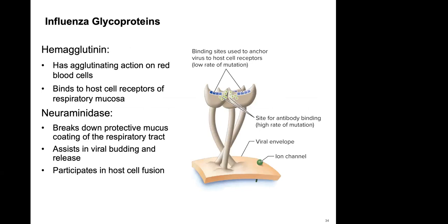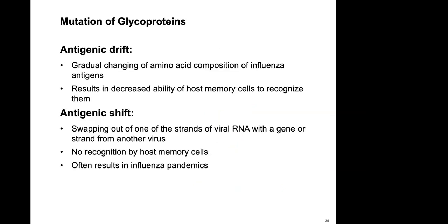The influenza virus has two different surface spikes: hemagglutinin (H) and neuraminidase (N). These change from season to season through a process called antigenic drift — a gradual changing of amino acids in the influenza antigens — resulting in decreased ability of host memory cells to recognize them.